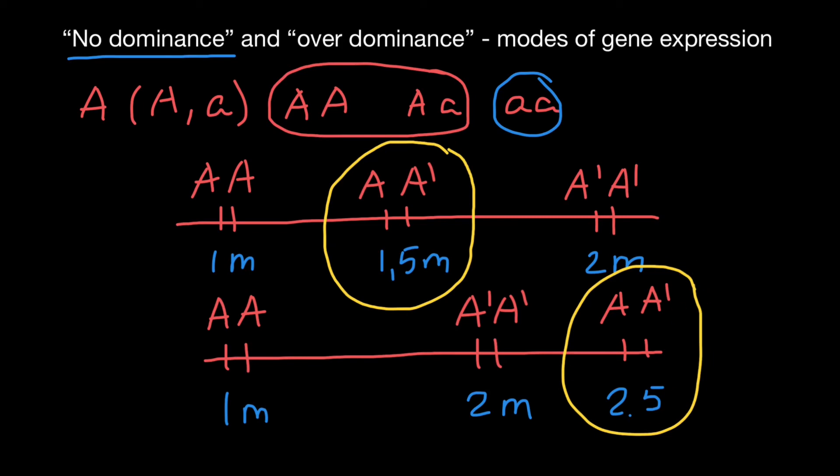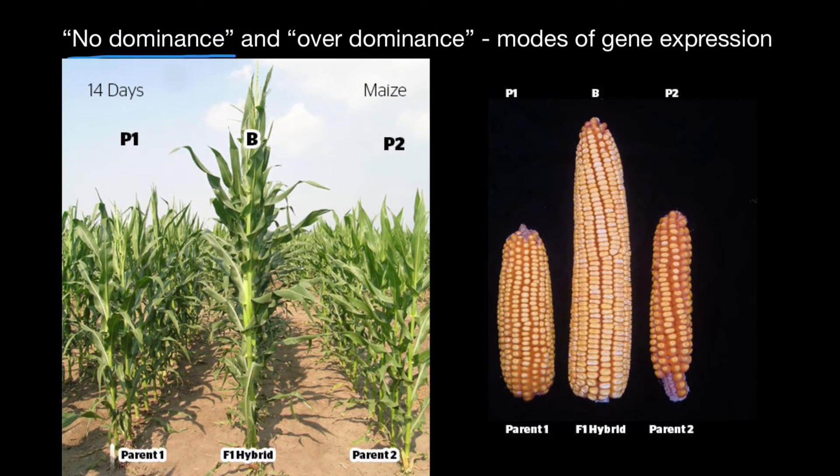If you are still confused about over dominance or heterozygous vigor, this picture is going to help me explain this idea. Imagine that we have here two inbred lines. That means that, for example, for the locus A, this parent has two dominant allele A's. Parent two has A prime and A prime alleles. And the plant here in the middle is a hybrid. This plant got one allele from parent one and another allele from parent two. So this plant is going to be capital A, capital A prime.